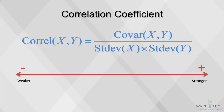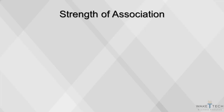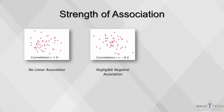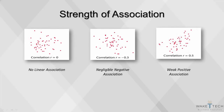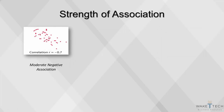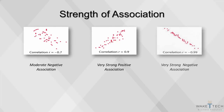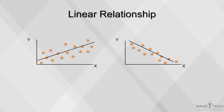A higher number is a stronger correlation, and a lower number is a weaker correlation. The correlation coefficient r measures the strength of linear association — the extent to which two variables are proportional to each other. It's unit free, so for example, a measure of correlation between player height measured in inches and player weight measured in pounds will be meaningful even if they're measured in different units. Here are some examples: no linear association, negligible negative association, weak positive association, moderate negative association, very strong positive association, very strong negative association.